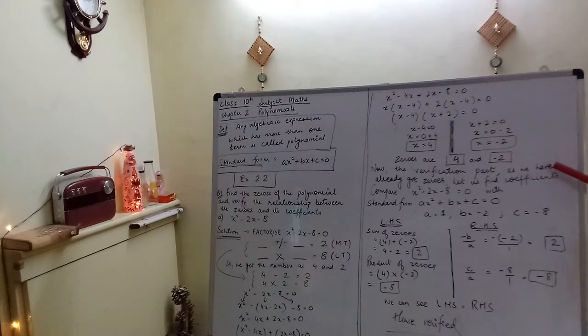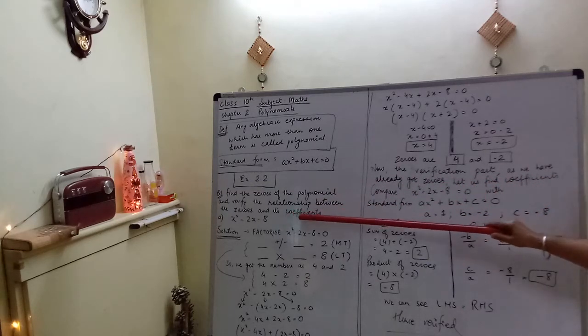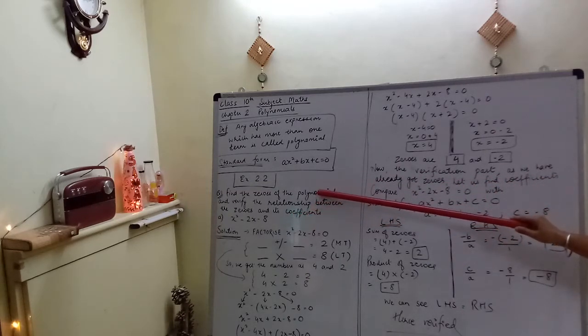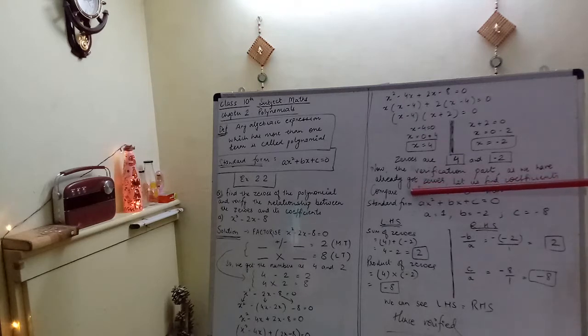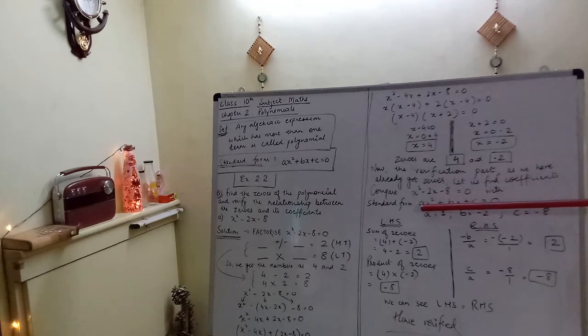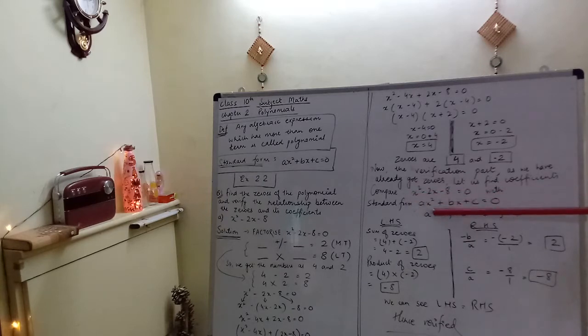Now let's move on to another level: coefficients. Why do we need coefficients? Because we have to verify the relationship. To verify the relationship, you need coefficients. Where will they come from? Our question was x square minus 2x minus 8 equals to 0. We have to compare this with standard form. Standard form is ax square plus bx plus c. If we see x square's coefficient, there is nothing, so in maths when there is nothing it becomes 1. Here x's coefficient is a, that means a is equal to 1.